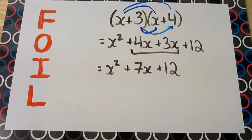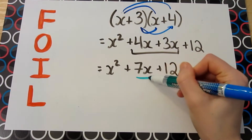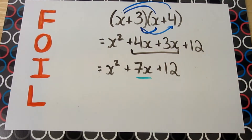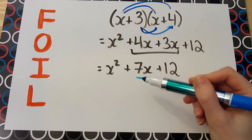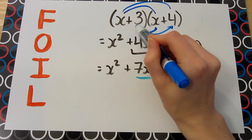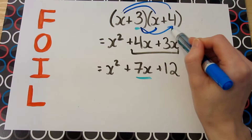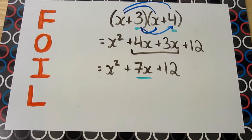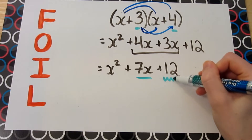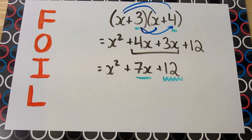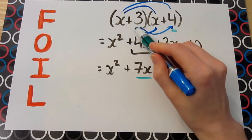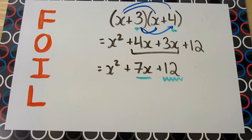So what do we notice here? The middle term of 7x — just looking at the 7 — is obtained by adding together the 3 and the 4 from the original binomials. Also, the last term of 12 was obtained by multiplying together the 3 and the 4 from the original binomials. This is not a coincidence — this is the idea behind figuring out how to factor trinomials.